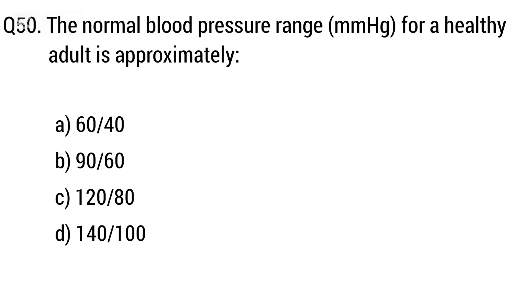Question 50. The normal blood pressure range in mmHg for a healthy adult is approximately? The right answer is option C: 120 over 80. Thank you.